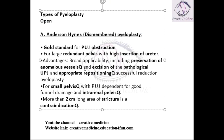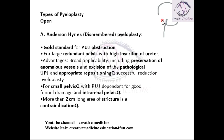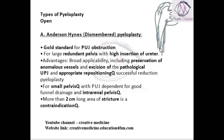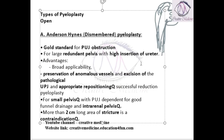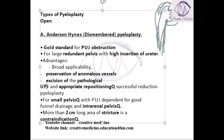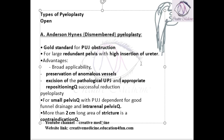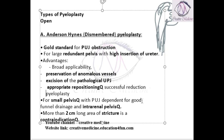In Anderson-Heinz pyeloplasty, a large redundant pelvis is seen because of hydronephrosis at the pelvic ureteric junction with high insertion of the ureter. This is mainly done for large pelvises with high insertion of the ureter. The main advantages include broad applicability, preservation of anomalous vessels, excision of the pathological uretero-pelvic junction, and appropriate repositioning with successful reduction.